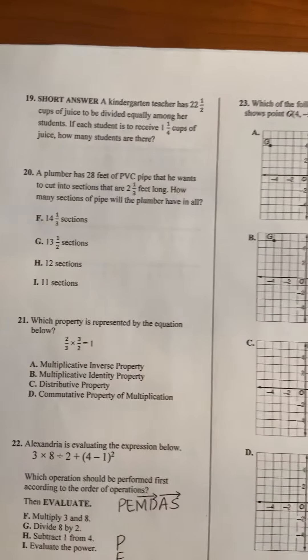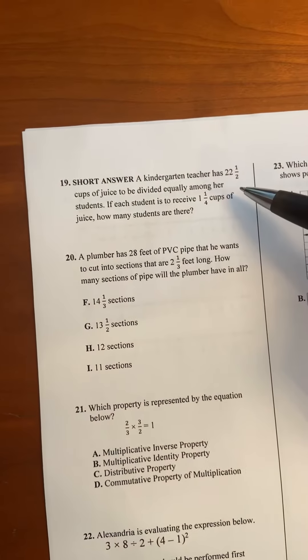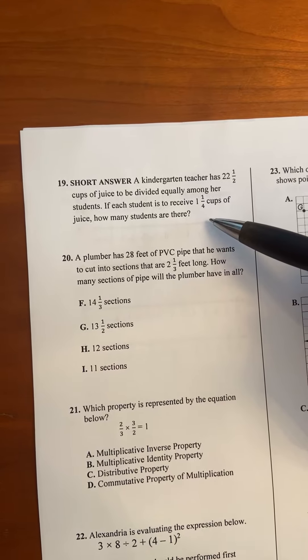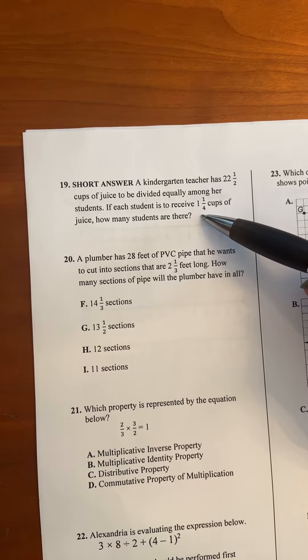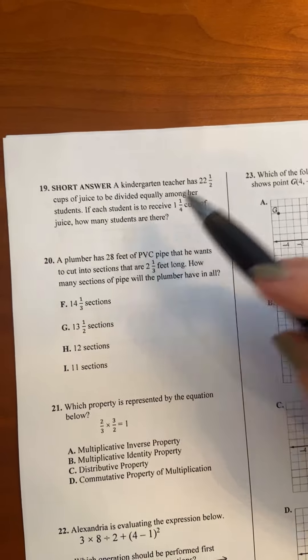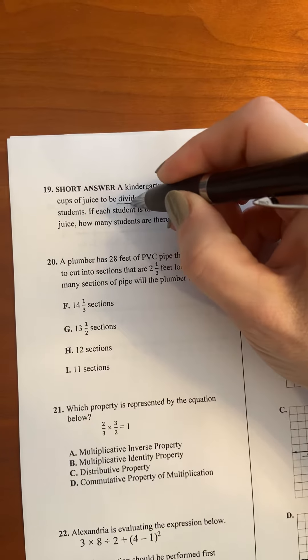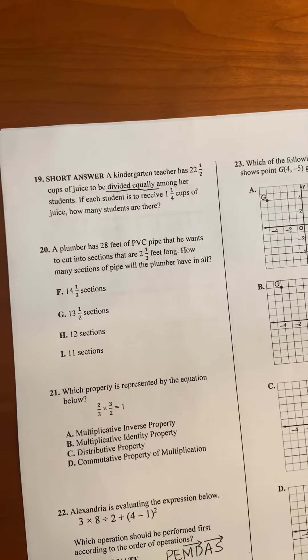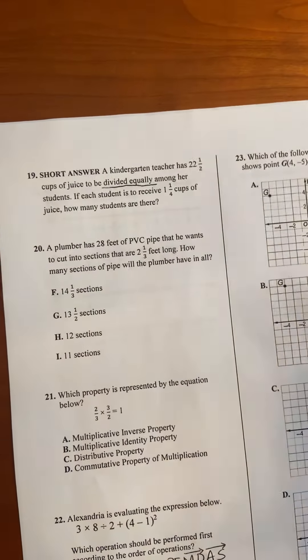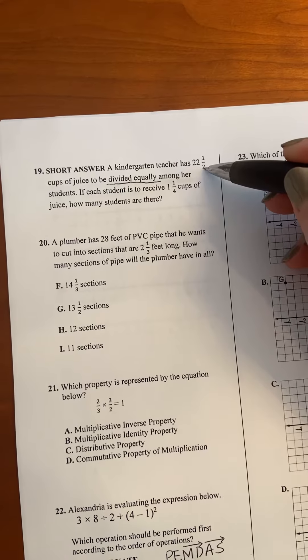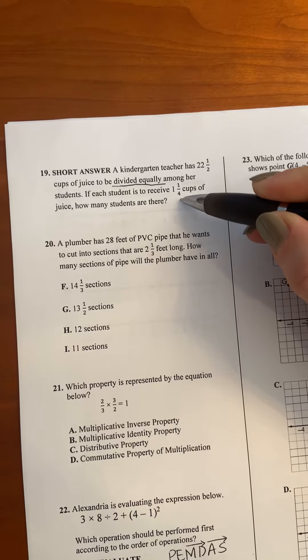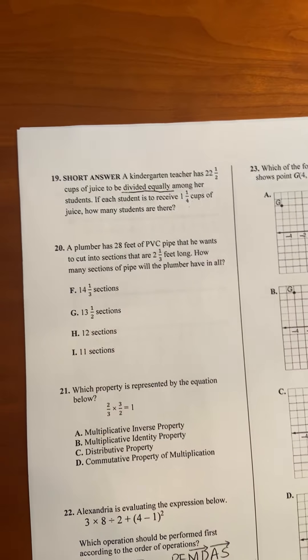Let's start with question number 19. A kindergarten teacher has 22 and a half cups of juice to be divided equally among her students. If each student is to receive one and a quarter cups of juice, how many students are there? Right away there are some key words in here. We see divided equally, and so that tells you that we're going to be dividing. When you split things into equal groups, that's division. So we're going to take the juice, divide them into equal groups of one and a quarter cups, and then we'll see how many servings we can make, which would tell us how many students there are.